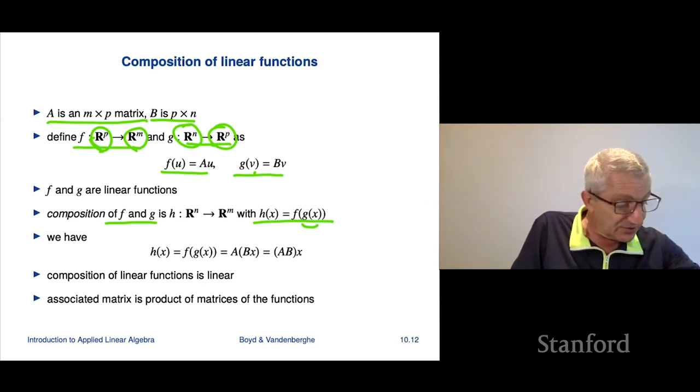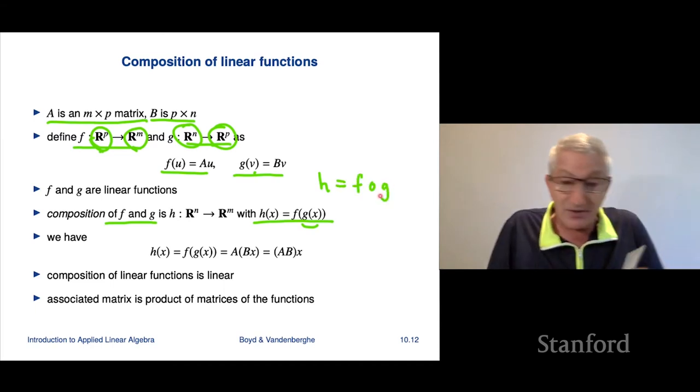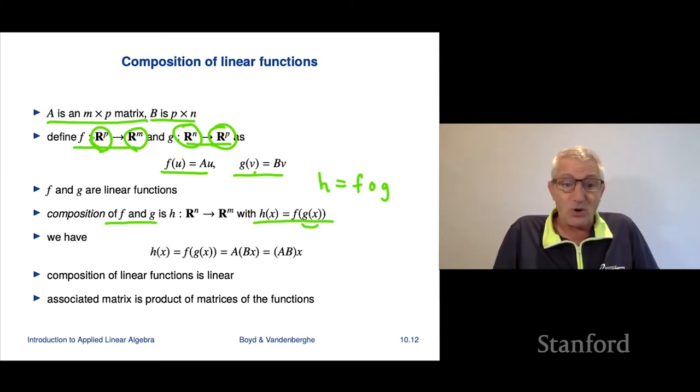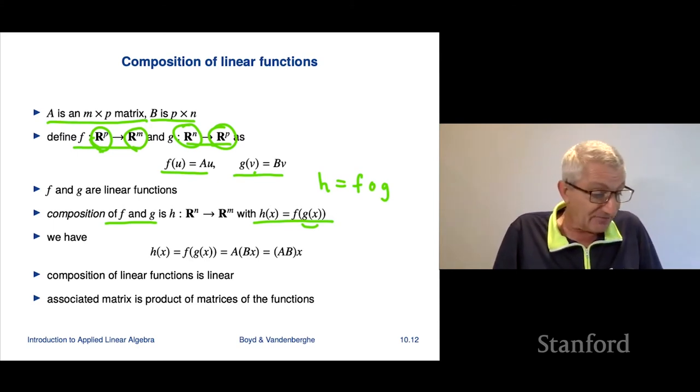By the way, another notation for this is h equals f and a little circle g. So that's another, that's a circle. That's not the letter O. It's a little circle. So f composed with g.